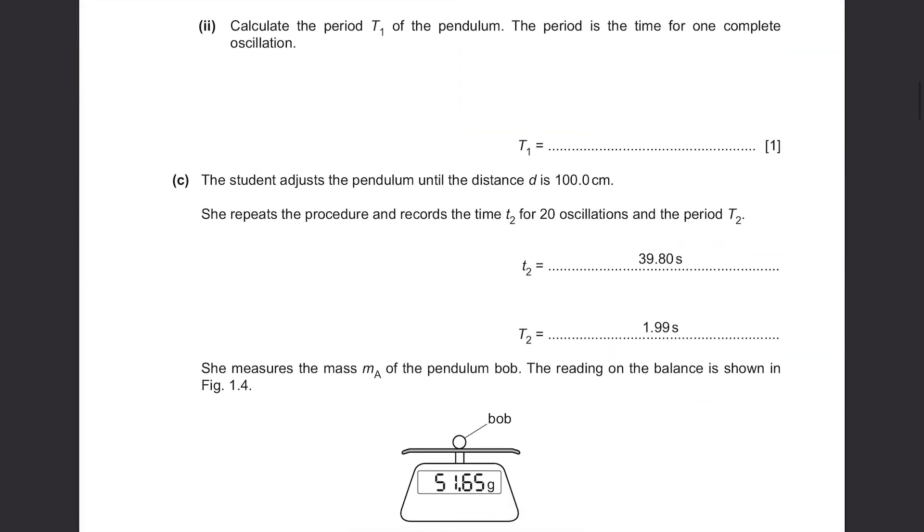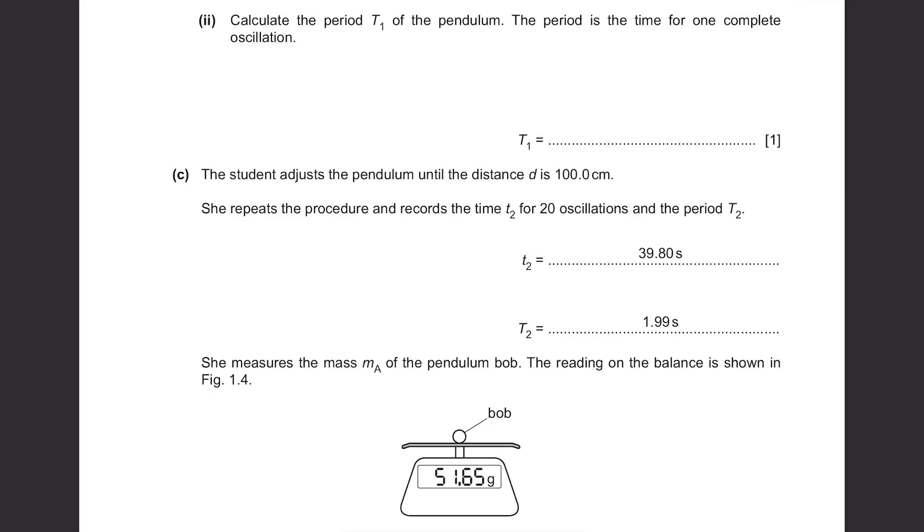Calculate the period T1 of the pendulum. The period is the time for one complete oscillation. This time was for 20 complete oscillations, so for one complete oscillation, it's gonna be 28.12 divided by 20, which is 1.406 seconds.